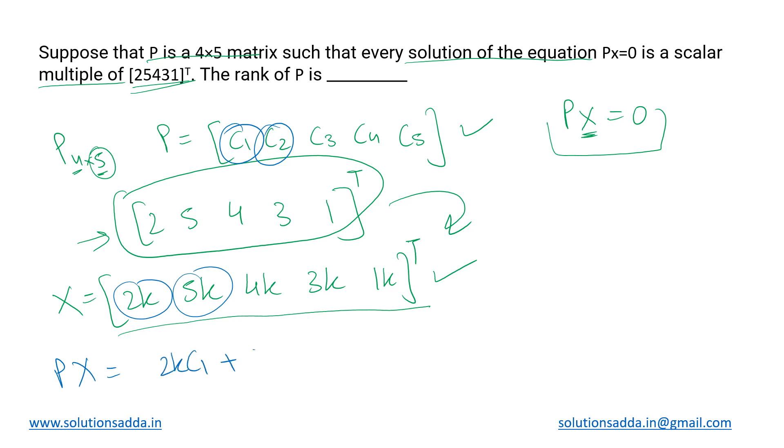times c1 plus 5k·c2 plus 4k·c3 plus 3k·c4 plus k·c5. But we wanted the solution of Px = 0, so we set this equal to 0. From this, we can take the common factor k outside. After removing k, we get the equation: 2c1 + 5c2 + 4c3 + 3c4 +